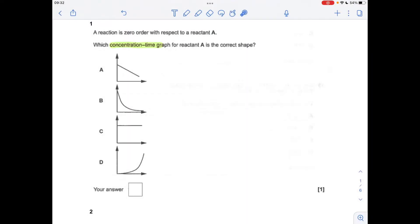Okay, so the first question you can see I've highlighted, these are concentration time graphs. So the gradient is the rate of the reaction. So if it's zero order, we don't want the gradient or the rate to change. So we're looking for constant rate, and it's A.